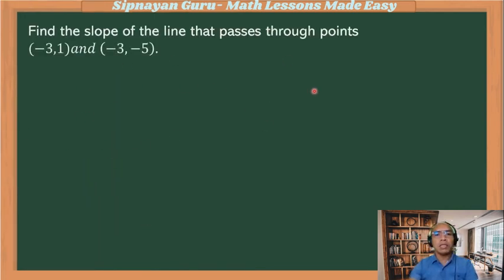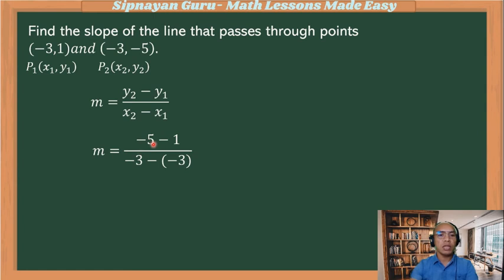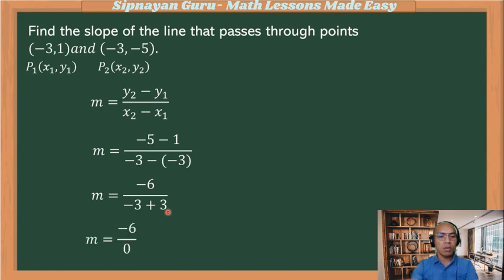Find the slope of the line that passes through (−3, 1) and (−3, −5). Point one: x₁ = −3, y₁ = 1. Point two: x₂ = −3, y₂ = −5. Using the formula: (−5 − 1) over (−3 − (−3)) = −6 over (−3 + 3) = −6 over 0. Any number divided by zero is undefined. So the slope of the line passing through these two points is undefined.